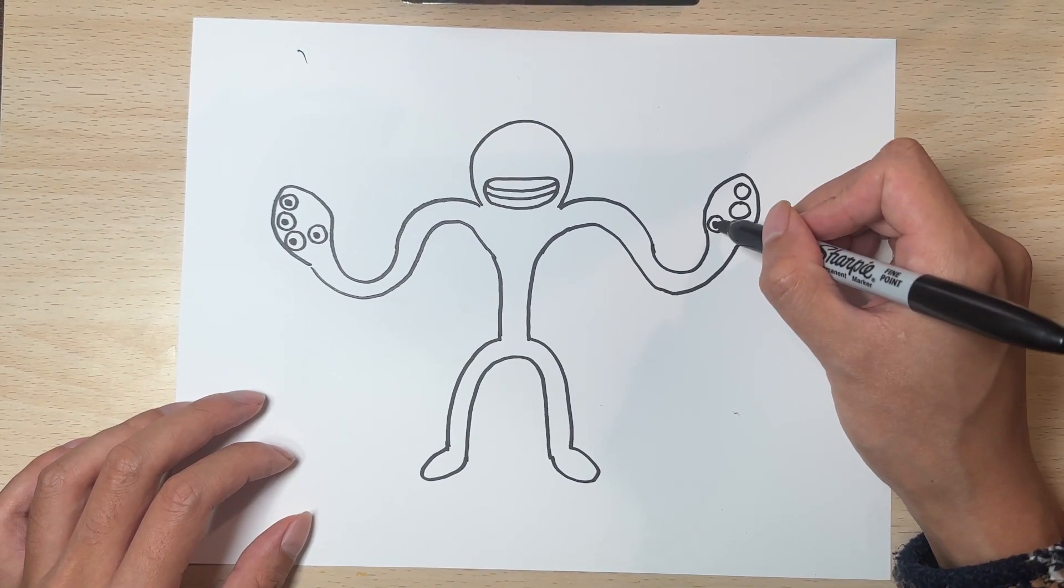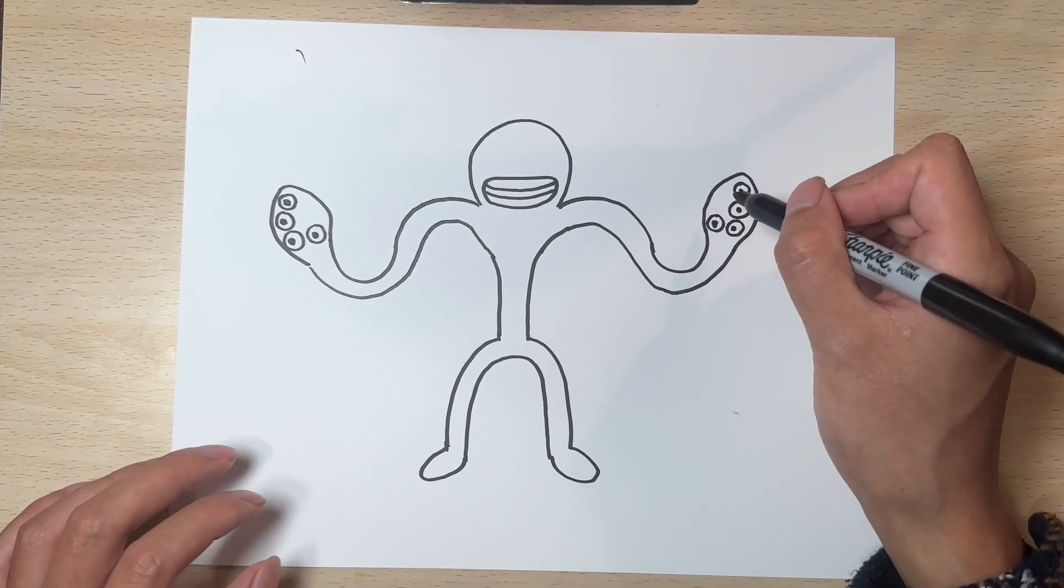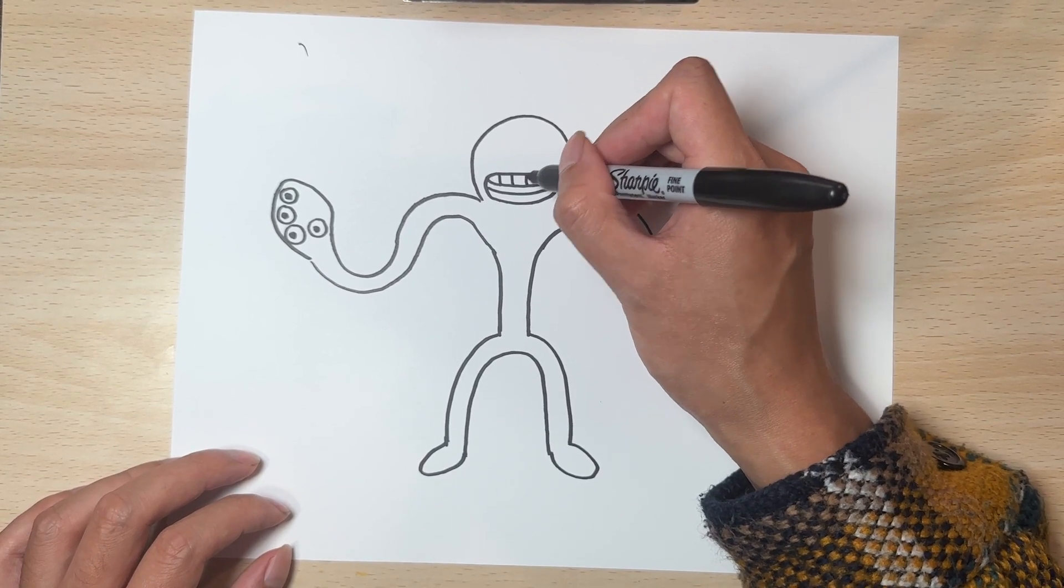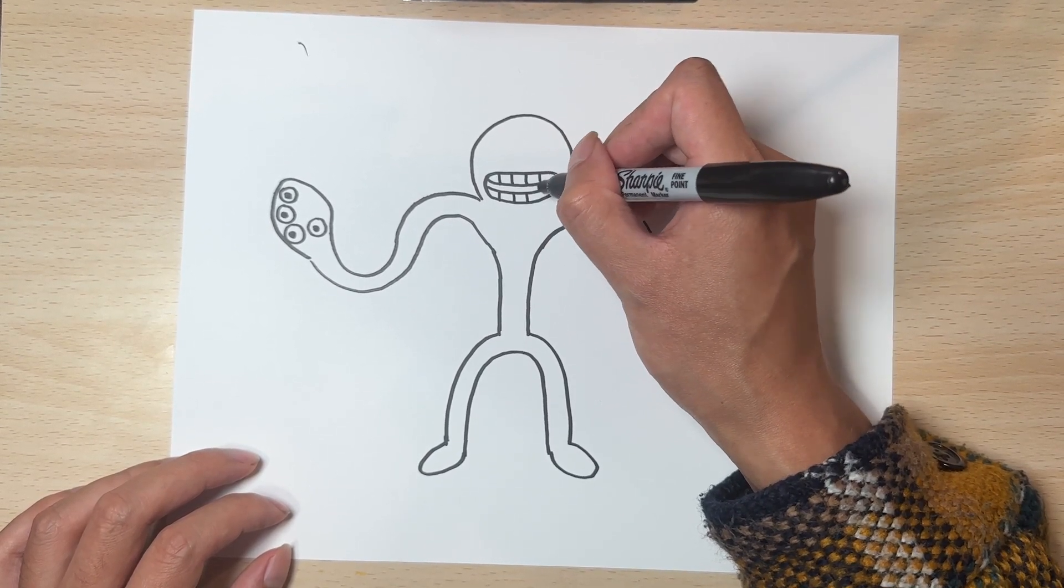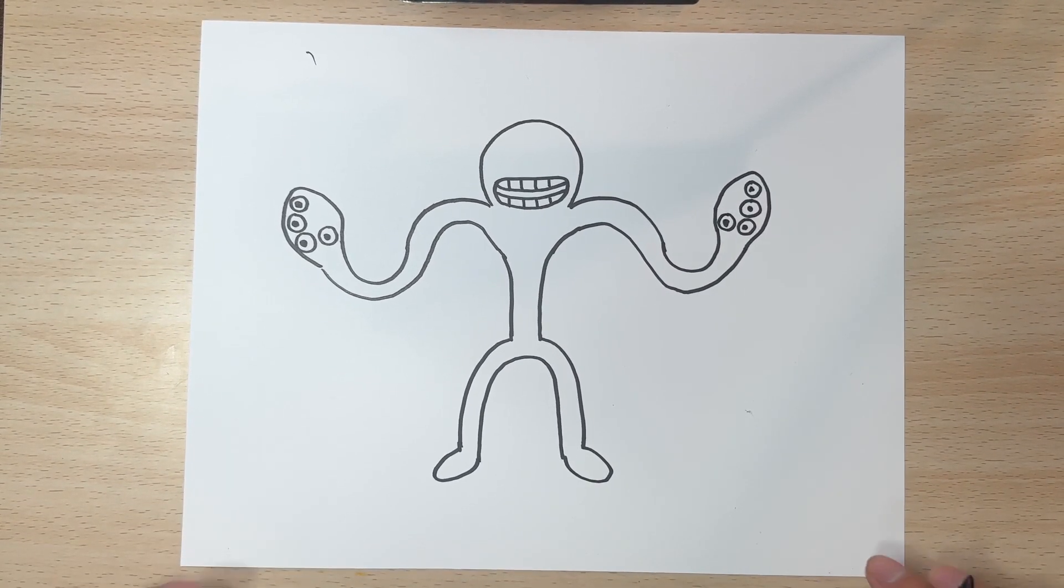We just need to fill in little eyes on these and we could just add in some lines for the teeth. Very simple. And that is pretty much it for our Lojo drawing.